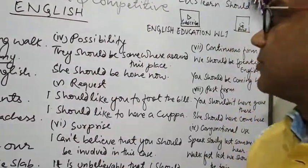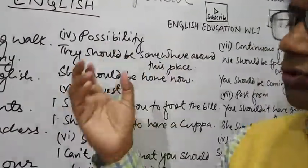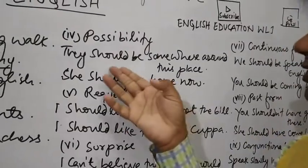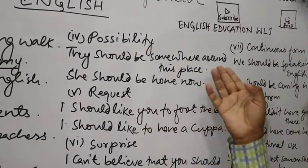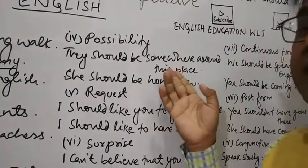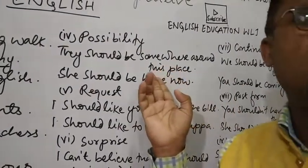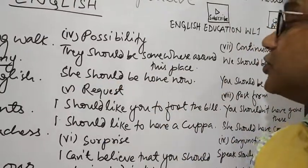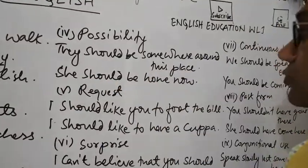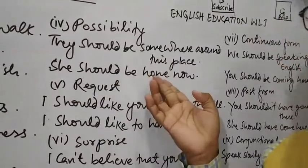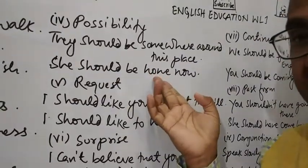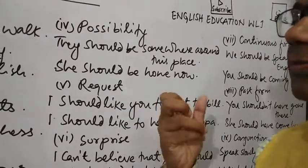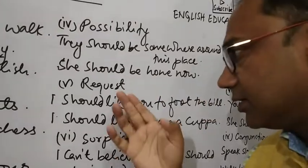The fourth use is Possibility. SHOULD can also express possibility. For example: 'There should be somewhere around this place.' Unhe is jagah ke aas-paas kahin hona chahiye. 'She should be home now' — Usse abhi ghar pe hona chahiye — because it's a lockdown, so she should be at home.